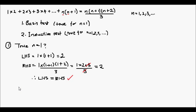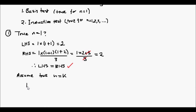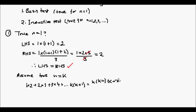Now because it's true for n is equal to 1, I'm going to assume that the equation holds true for n is equal to any integer, specifically when n is equal to k. So that means 1 times 2 plus 2 times 3 plus 3 times 4 plus so on and so forth, where k times k plus 1 equals k times k plus 1 times k plus 2, all divided by 3. I'm going to assume that this is true.